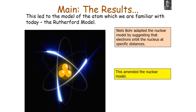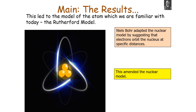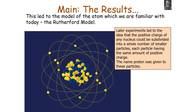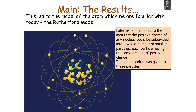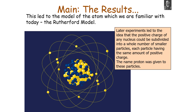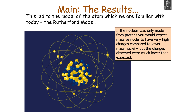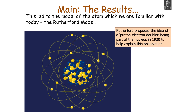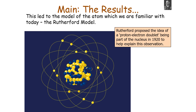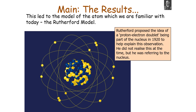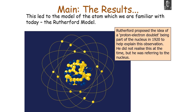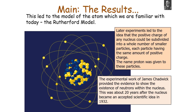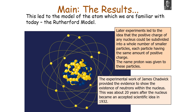Later, Niels Bohr adapted the nuclear model by suggesting that electrons orbit the nuclei at specific distances — an amendment because Bohr's theoretical calculations agreed with experimental observations. Further experiments led to the idea that the positive charge of any nucleus could be subdivided into a whole number of smaller particles, each with the same amount of positive charge, and the name proton was given to these particles. Rutherford proposed the idea of a proton-electron doublet being part of the nucleus in 1920 to explain why massive nuclei had lower charges than expected — he was actually referring to the neutron without realising it. The experimental work of James Chadwick provided evidence that neutrons exist within the nucleus, about 20 years after the nucleus became an accepted scientific idea, in 1932.